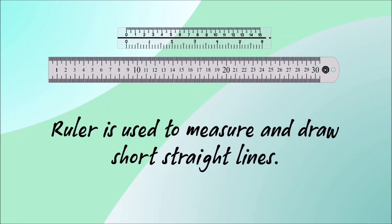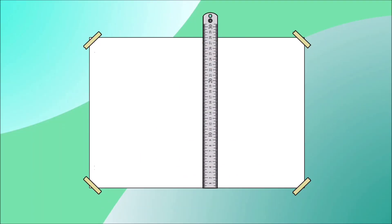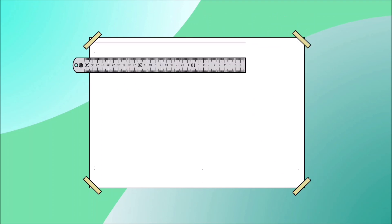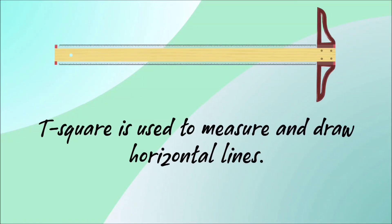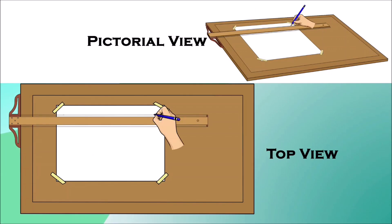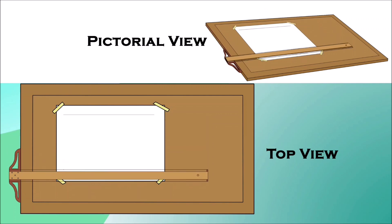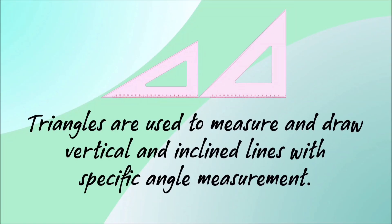Ruler is used to measure and draw short straight lines. T-Square is used to measure and draw horizontal lines. Triangles are used to measure and draw vertical and inclined lines with a specific angle measurement.